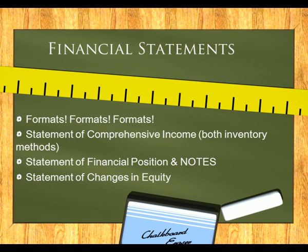When preparing financial statements, refer to your manual as formats are very important. For the statement of comprehensive income, know both methods — the perpetual system has cost of sales directly, while the periodic system requires you to calculate it. For the statement of financial position, know all the accompanying notes. The statement of changes in equity will give you the capital balance for the statement of financial position.